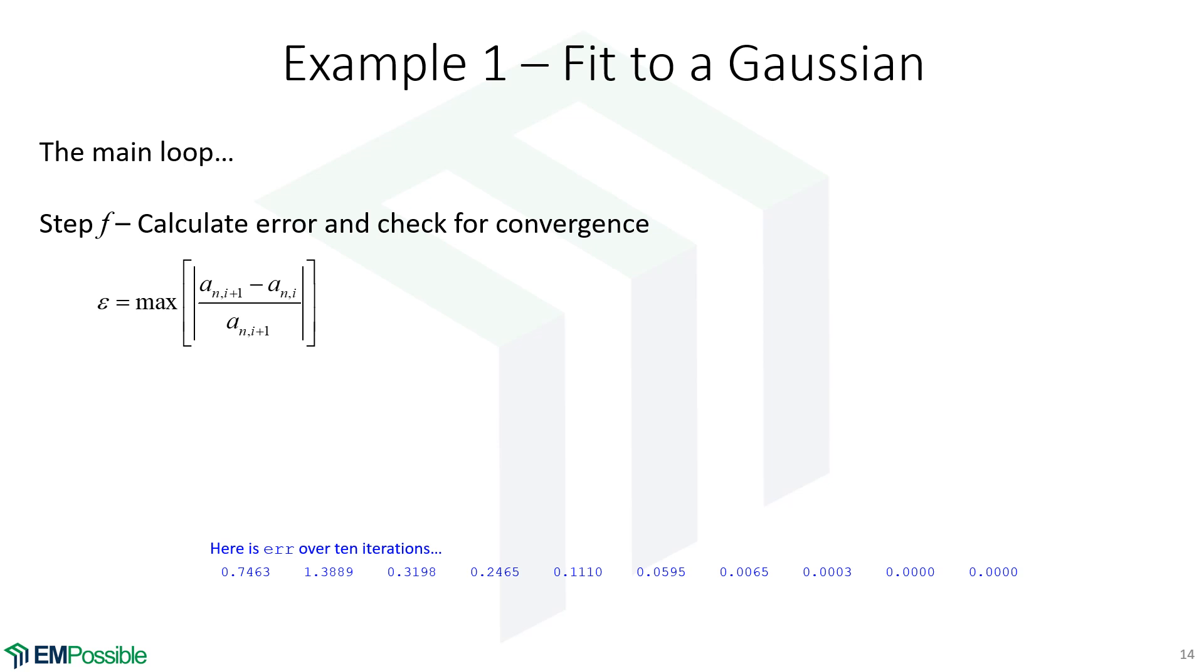So, the very last thing is to calculate the error. And so, what I'm doing is I'm looking at the change in these curve fit coefficients. I am normalizing it. So, we're really looking at relative changes. And we have three curve fit parameters here. So, I'm going to take the maximum one and wait until that dips below some threshold. And if I'm constantly looking at the maximum one, I can watch that go down, and we can see we're getting pretty well converged after about 10 iterations.